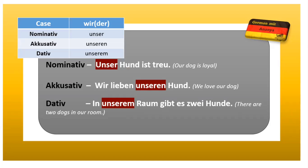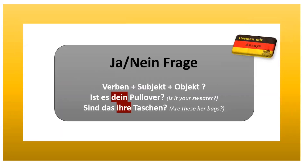I hope it is clear to you. Now, how to frame Ja/Nein-Fragen? Till here you have seen simple sentences. In Ja/Nein-Fragen, the verb comes first. The rule is: verb plus subject plus object. For example: 'Ist das dein Pullover?' — is this your sweater? The possessive pronoun here is 'dein'. If your answer is yes, then 'ja'; if no, then 'nein'. Another example: 'Sind das ihre Taschen?' — are these her bags? The possessive pronoun here is 'ihre'.